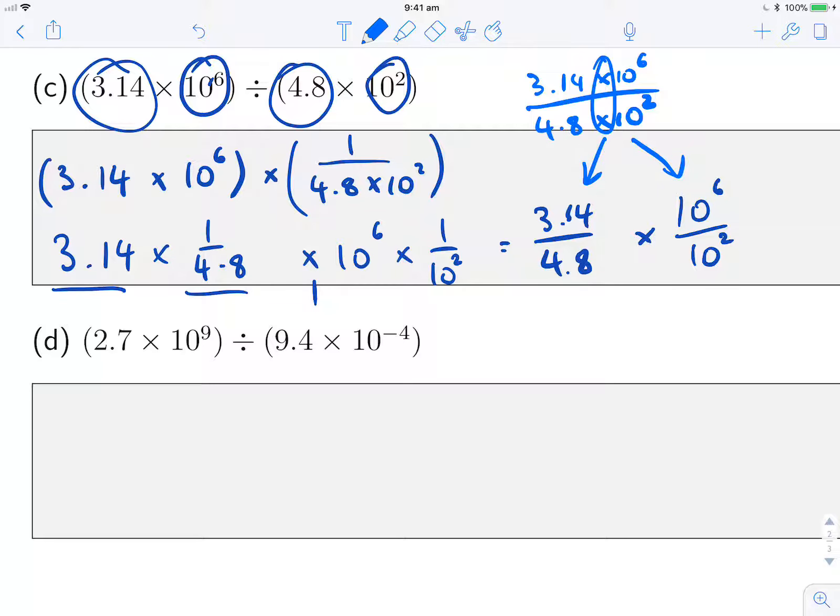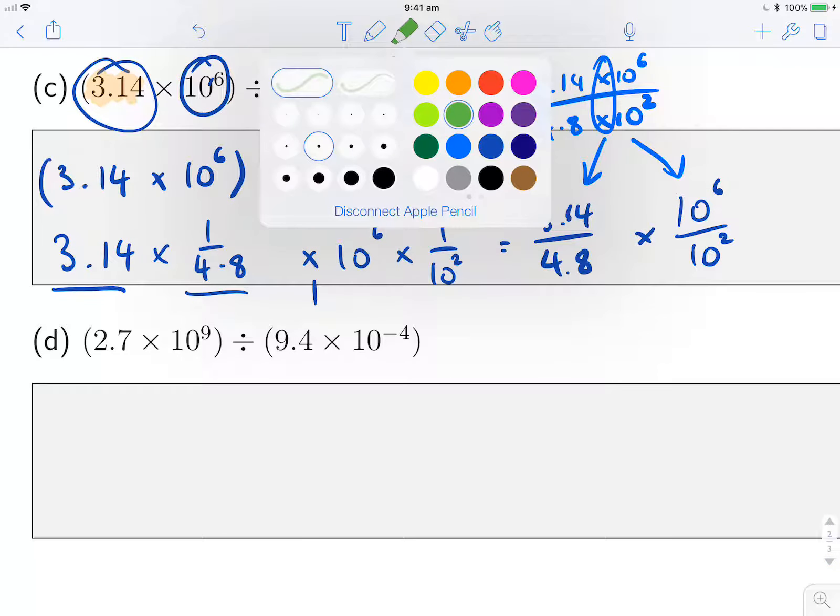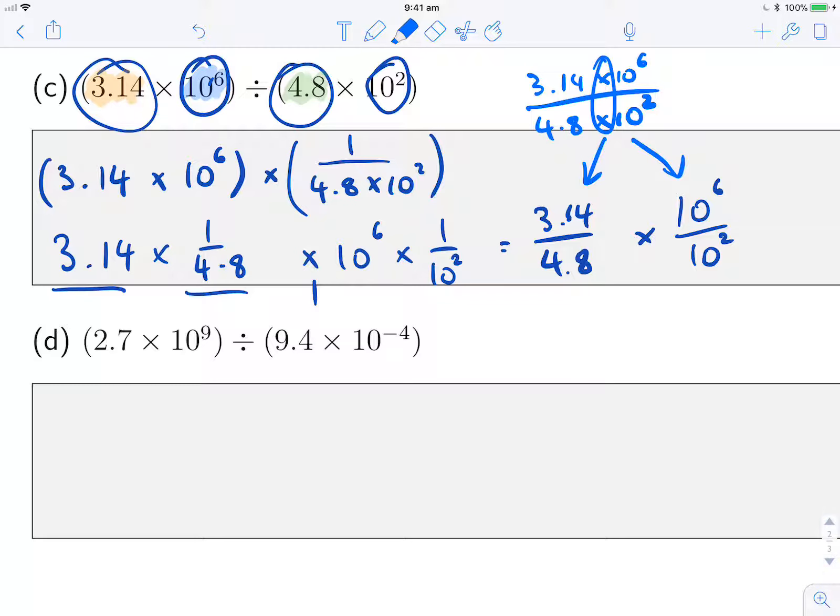So either way, when we're doing divisions, we just have to do this. We take the first two numbers and work out one divided by the other, and then we can take the second two numbers and work out that divided by the other. We have to make sure we do it the right way around. Unlike multiplication, where we can do 3.14 times 4.8 or 4.8 times 3.14, we have to make sure the first number is on top and the second number is on the bottom, but after that, we can just evaluate these separately.